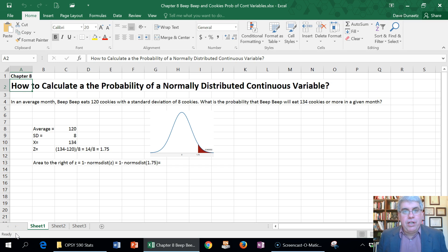In this problem, we're going to look at how we can calculate the probability of a normally distributed continuous variable. Let's choose an example of Beep Beep's eating habits. You might remember who Beep Beep is. In the average month, Beep Beep eats about 120 cookies, and that's about four per day. Now, he kind of uses self-control. He doesn't eat as many as he can, but sometimes that's what he aims for, but there's a variety.